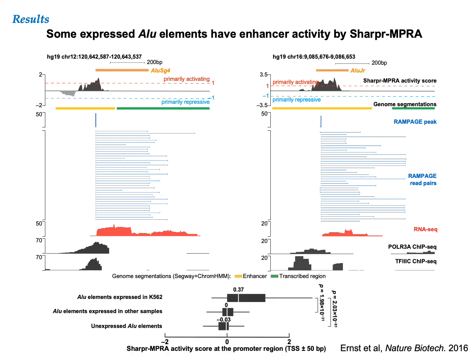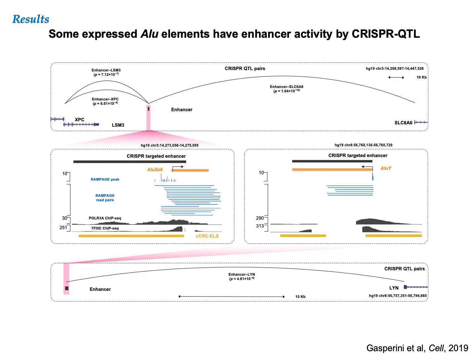We detected a four-fold increase in the Alu elements expressed in embryonic stem cells over the Alu elements expressed in other samples or unexpressed in any samples. We observed similar results using STARR-seq data in naive embryonic stem cells. SHARPR-MPRA is another assay that provides a direct readout of enhancer function for select genomic regions. Here are two Alu elements expressed in K562 cells that have enhancer activities by the SHARPR-MPRA assay applied to the same cell type. Overall, we observed significantly higher overlap between expressed Alu elements and SHARPR-MPRA enhancers than for unexpressed Alu elements.